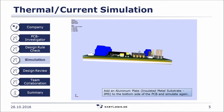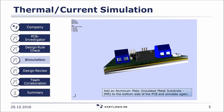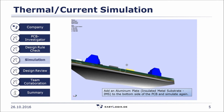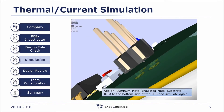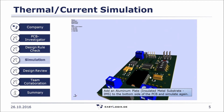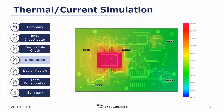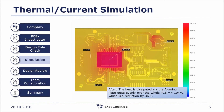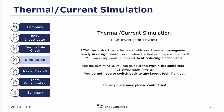A good solution could also be a so-called insulated metal substrate on one side of the PCB. In this example, we added a gap pad and a 2 mm aluminum plate to the bottom side. We see the initial situation with the hotspot at 140 degrees maximum temperature. The insulated metal substrate helps to spread the heat quite evenly over the whole board, and in that way the temperature could be decreased by 36 degrees. PCB Investigator physics helps you with thermal management already in the design phase, even before the first prototype is produced. You can easily simulate different heat-reducing mechanisms, and the best thing is you do all of this within the same tool — PCB Investigator physics — without having to switch back to any layout tool.